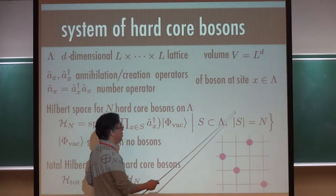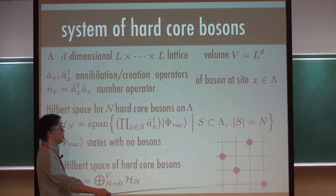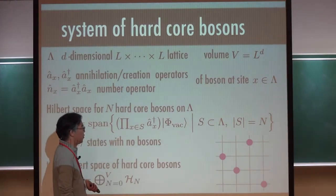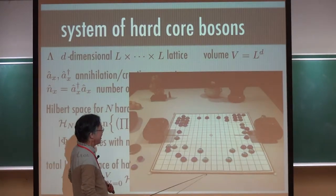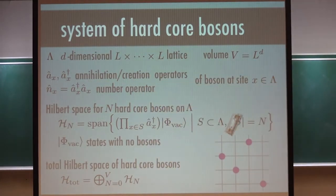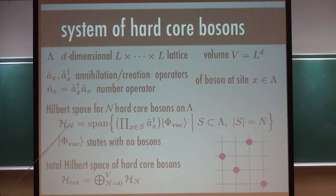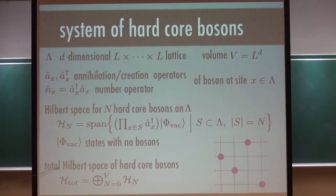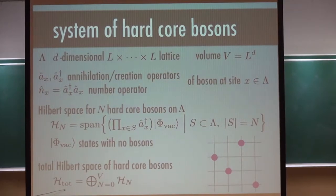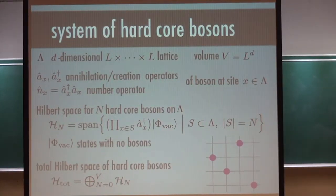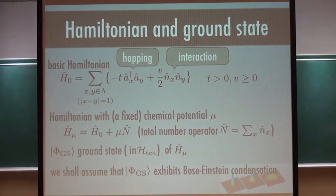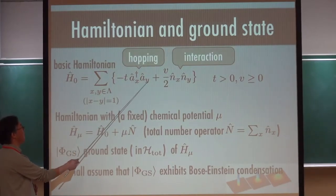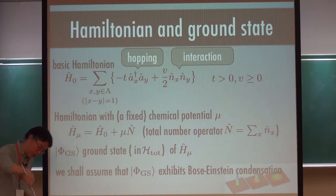S is a subset of lambda with size N. You get configurations like N=1, 2, 3, 4, or more complicated configurations. These are massive bosons. So this is the Hilbert space for N-particle bosons. The total Hilbert space is just the direct sum of all these Hilbert spaces — so there can be no bosons or just two bosons. This is the total Hilbert space.